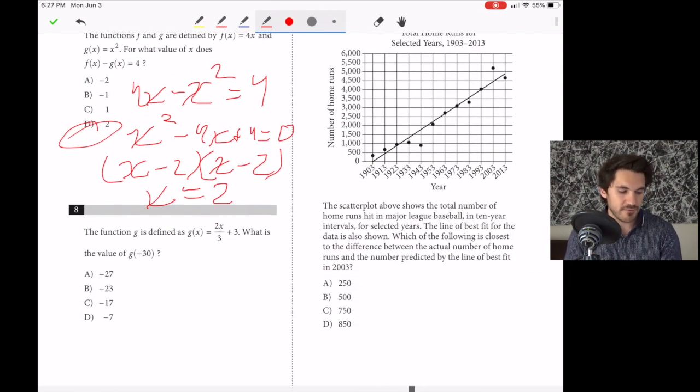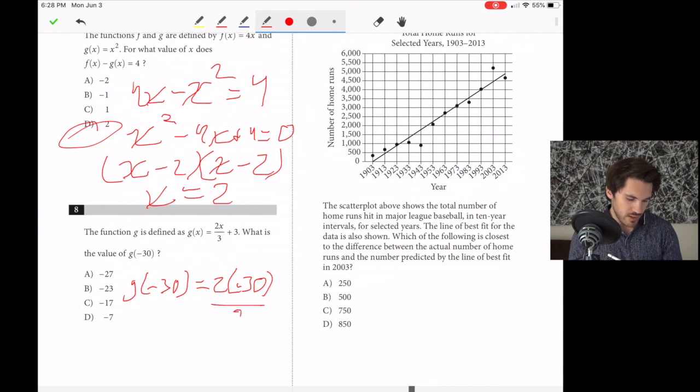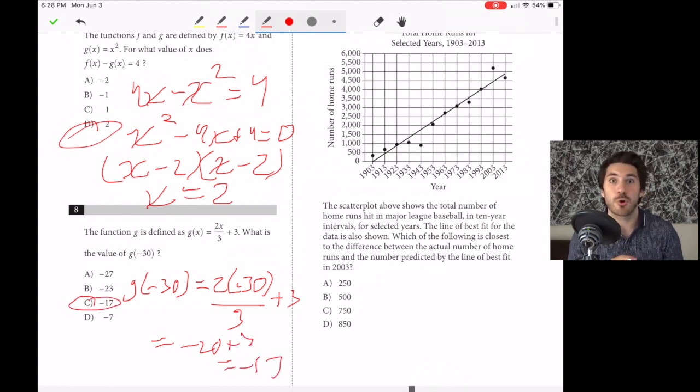Number eight. The function g is defined as g(x) equals 2x over 3 plus 3. What is the value of g of negative 30? Replace all x's with negative 30. g of negative 30 equals 2 times negative 30 divided by 3 plus 3. This equals negative 20 plus 3, which equals negative 17. So C is our answer.